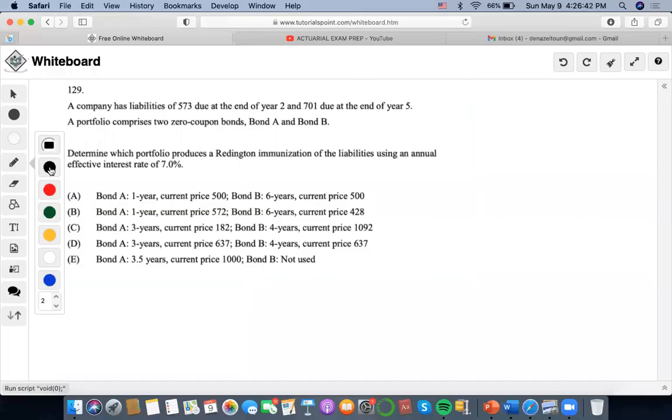All right, so for this one a company has liabilities of 573 at the end of year 2 and 701 at the end of year 5. Now it says that the portfolio comprises two zero-coupon bonds, Bond A and Bond B, and we need to determine which portfolio produces immunization.